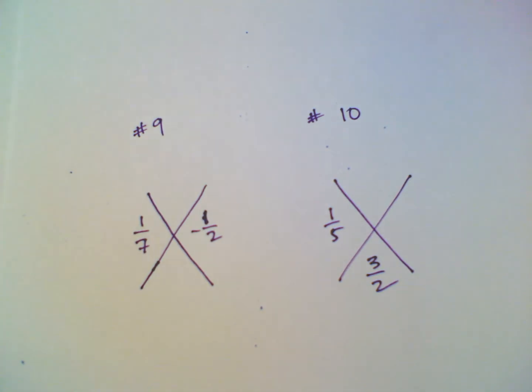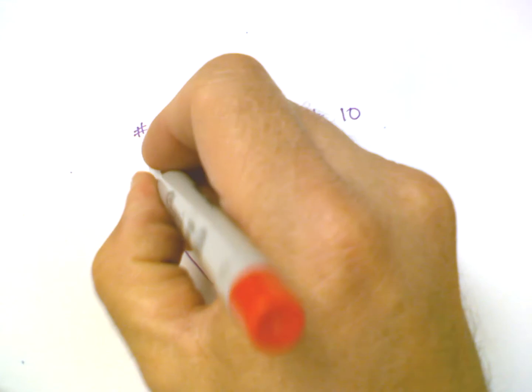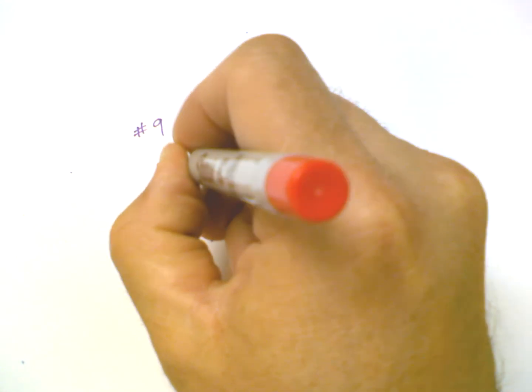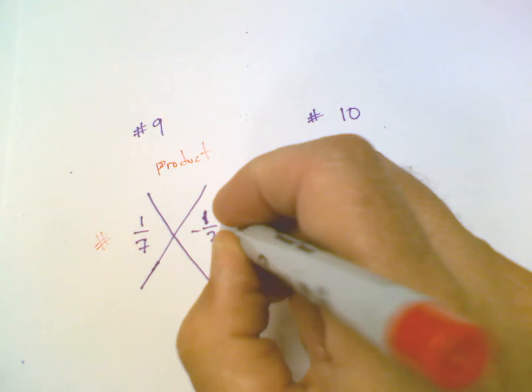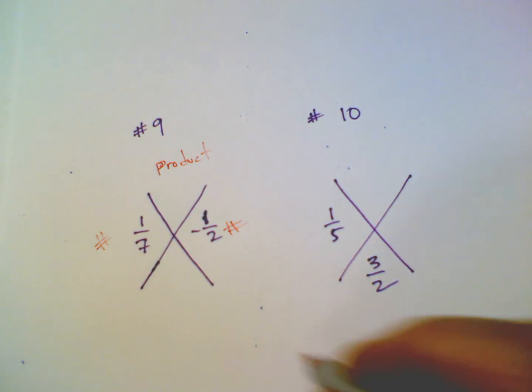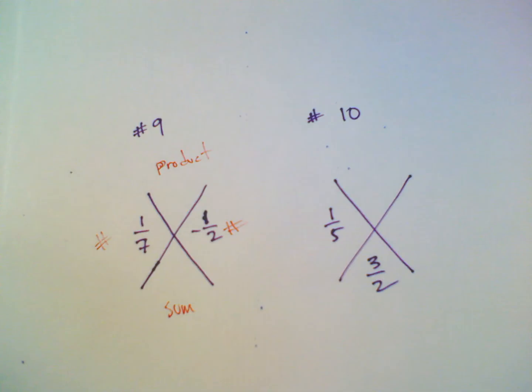So remember diamond problems, right? This is always the product on top of these two numbers. The numbers are on the side. Product and then the sum is the one on the bottom. So product and sum.